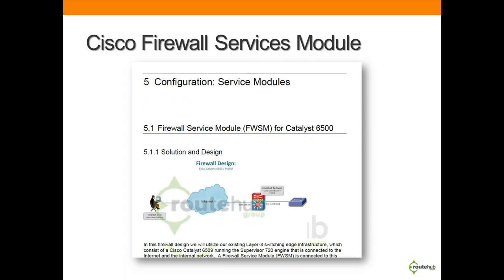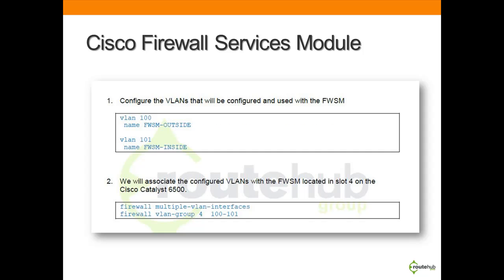We will show you how to configure a firewall service module, including the necessary configuration on a Cisco Catalyst 6500 series layer 3 switch, where this is ideal for consolidating your firewall services within your network for large environments. Here's a screenshot from this section showing step-by-step configuration for the firewall service module.